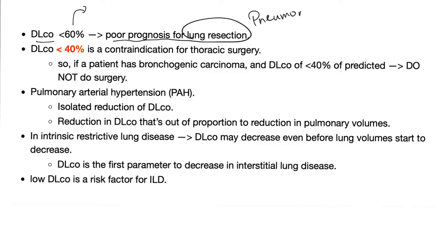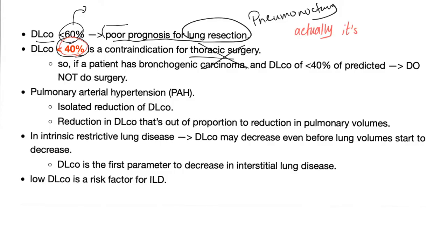If DLCO is less than 60% of predicted, this indicates poor prognosis for lung resection such as pneumonectomy. If it's less than 40%, it is a contraindication to thoracic surgery. If DLCO is less than 40% in a lung cancer patient, the cancer has likely spread to the brain, adrenals, and elsewhere — removing the lung won't save the patient. Pulmonary arterial hypertension can sometimes show isolated reduction in DLCO while the spirometer shows normal results.